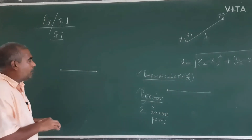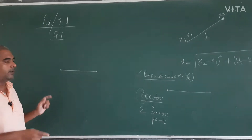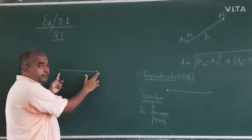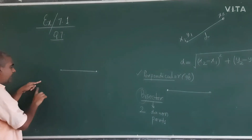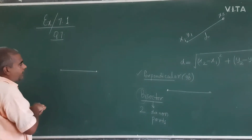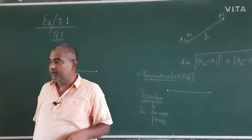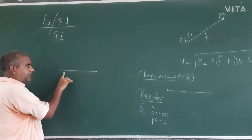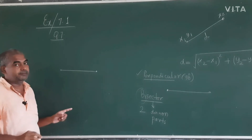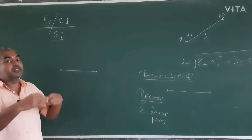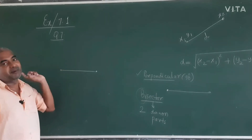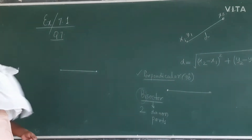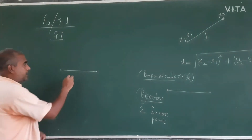How can we find the midpoint? One method is: draw the line, measure the length, divide by two, place the scale again and get the midpoint. But we will not use that method here, because suppose we don't have a scale — we still need to find the midpoint.